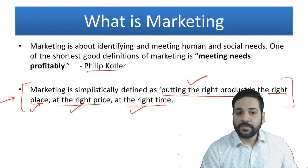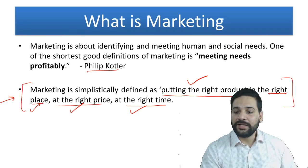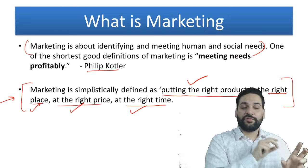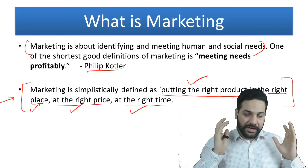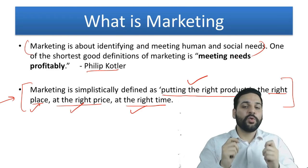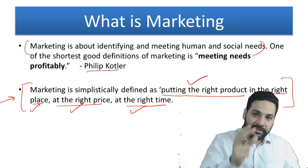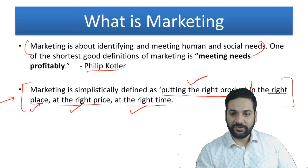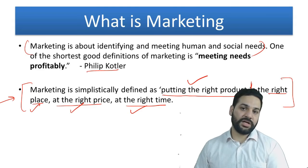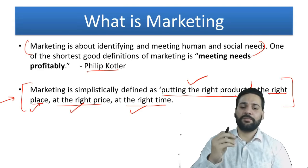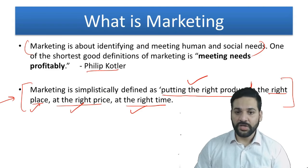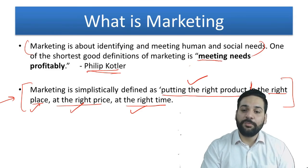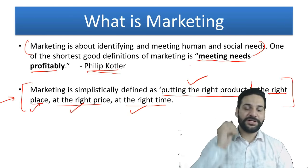As per Philip Kotler, marketing is about identifying and meeting human and social needs. First, identify what consumers are looking for, produce that product, and provide it at the right price, time, and place. The shortest definition by Philip Kotler — from his book — is: 'meeting needs profitably.' That is the best definition of marketing.